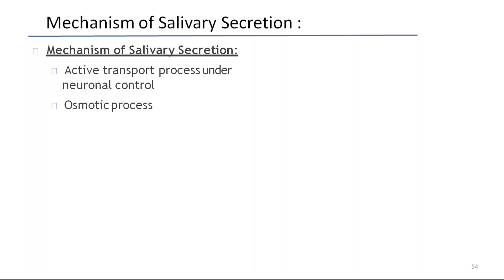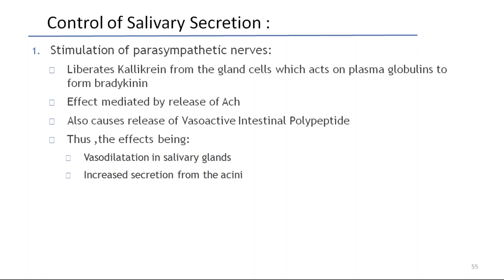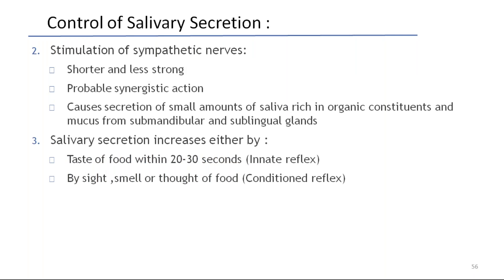Saliva secretion occurs either through active transport under neuronal control or osmotic process. Stimulation of parasympathetic nerves liberates kallikrein from the gland cells, which acts on plasma globulins to form bradykinin. The effect is mediated by release of ACh and also causes release of vasoactive intestinal polypeptide, with effects being vasodilation in salivary glands and increased secretion from the acini — so parasympathetic supply increases secretion. Stimulation of sympathetic nerves causes secretion of small amounts of saliva rich in organic constituents and mucus from submandibular and sublingual glands. Salivary secretion increases either by taste of food within 20 to 30 seconds (innate reflex) or by sight, smell, or thought of food (conditioned reflex).